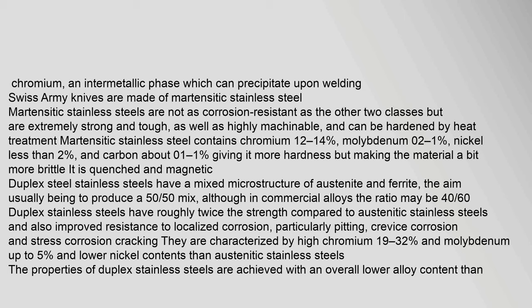Martensitic stainless steels, used to make items such as Swiss Army knives, are not as corrosion resistant as the other two classes but are extremely strong, tough, and highly machinable, and can be hardened by heat treatment. Martensitic stainless steel contains 12 to 14% chromium, up to 0.2% molybdenum, less than 2% nickel, and about 0.1% carbon, giving it more hardness but making the material a bit more brittle. It is quenched and magnetic.